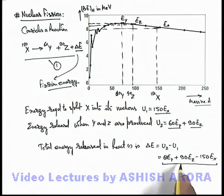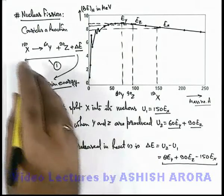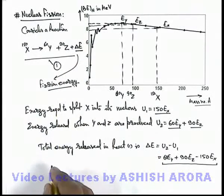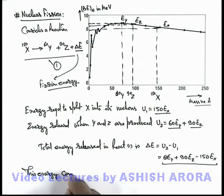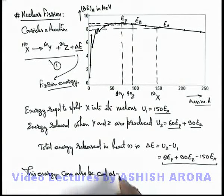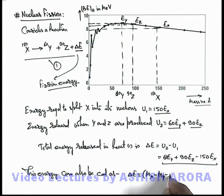And the same energy can also be calculated by using the mass defect. This energy can also be calculated as ΔE equal to mx minus my minus mz multiplied by c squared.